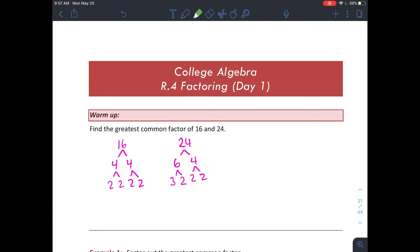First make a factor tree for each number and then find the factors that are shared. So they share a 2, they share another 2, and they share one more 2. So they have in common three factors of 2, so the greatest common factor is those three factors of 2, which if you multiply it's just 8.